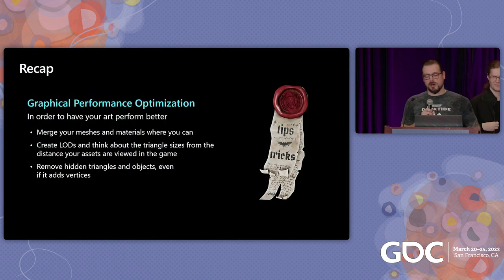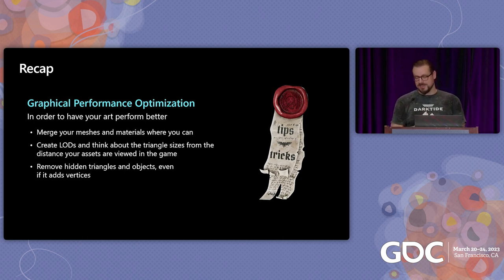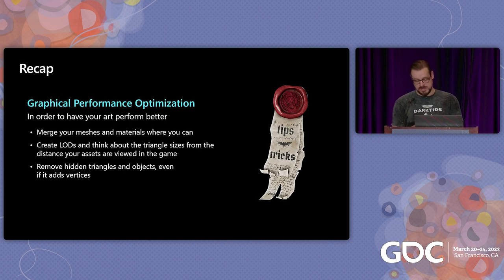Let's do a recap. From the general optimization section: merge your meshes and materials wherever you can. Create LODs and think about triangle sizes and shapes. Remove the hidden triangles and objects you can't see — like stuff inside stuff — even if it adds vertices, as it's almost always worth it.